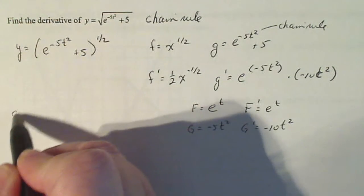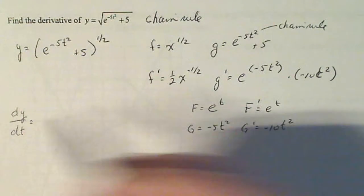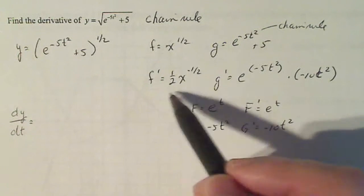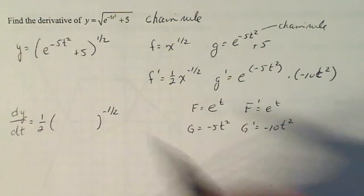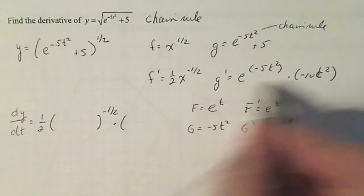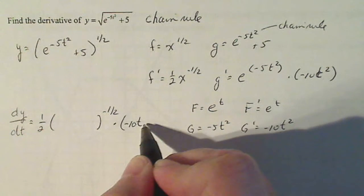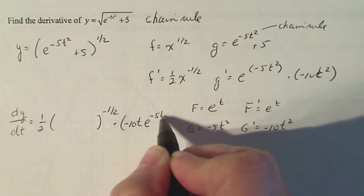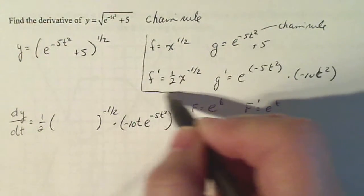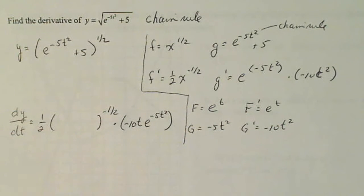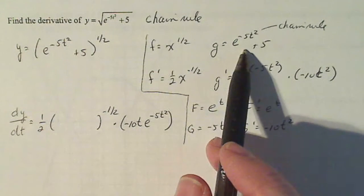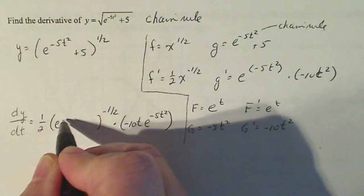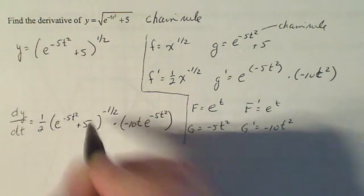Now if I'm gonna do dy/dt, I follow the same rule for the chain rule. I take the outside derivative one half to the minus one half. And then I multiply times the inside derivative, which is if I simplify this, it's going to be minus 10t e to the minus five t squared. I'm gonna put a little line here so we can keep that separated. So f prime g prime. And then of course, what goes inside here was the original g e to the minus five t squared plus five.